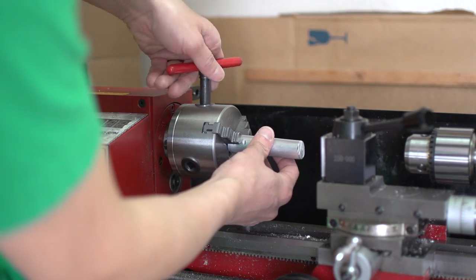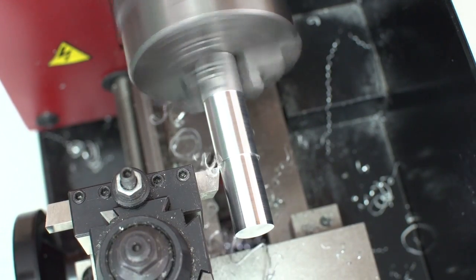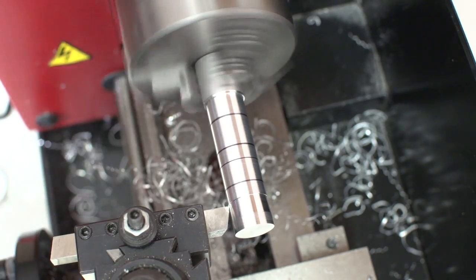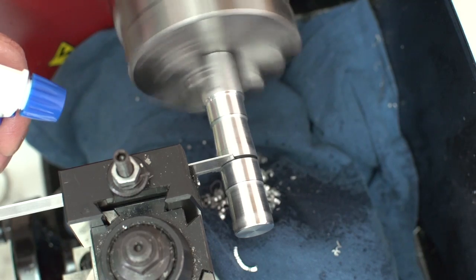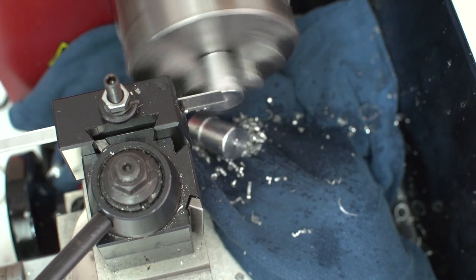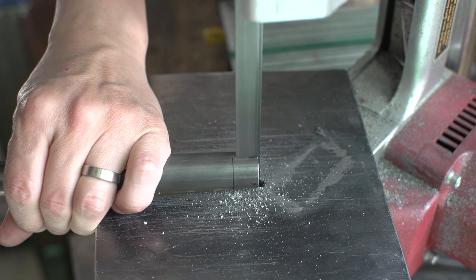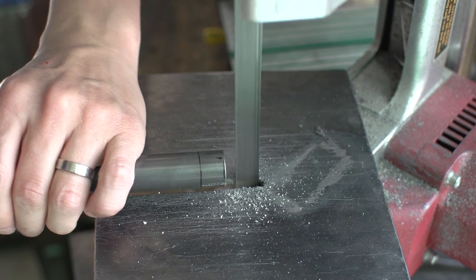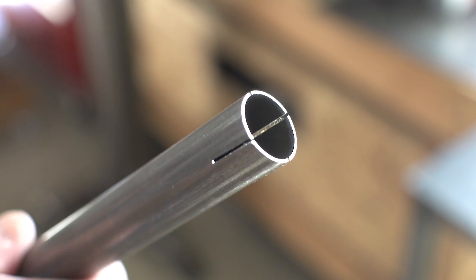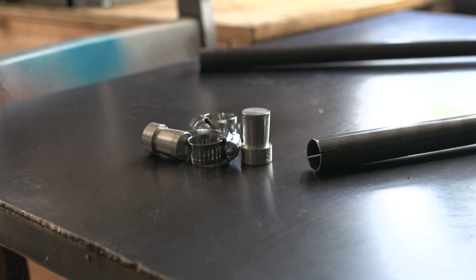Alright, so first thing we need to do is bend the seat stays. I'll try the fill the tube with sand method, and that's exactly what it sounds like. You fill the tube with sand and the sand prevents the tube from pinching or compressing where the bend happens. Normally you weld some end caps on there to hold the sand in the tube, but rather than do that I thought I would turn a set of aluminum caps. So I will see how that goes.